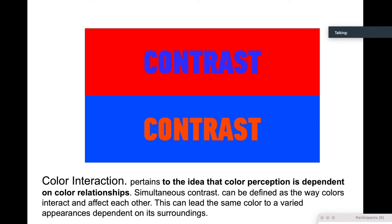So the main reason why op art works really well is its use and understanding of color interaction. And color interaction, we've talked about before a little bit, it pertains to the idea that color perception is dependent on color relationships. So what does that mean? When you take two different colors, when you put them together, they react to each other. So what does that mean? Sometimes they'll vibrate, sometimes they will look like they move, sometimes the edges will look like they are lost. And this can be referred to as simultaneous contrast. It can be defined as the ways colors interact or affect each other. And this can lead to the same color to a varied appearance, depending on its surroundings. So you see that this image is a little difficult to look at, right?